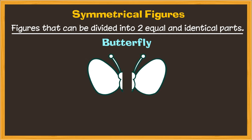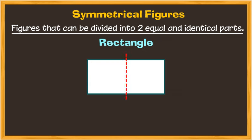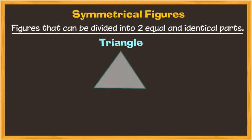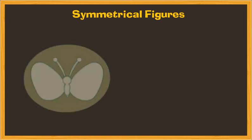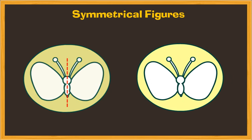But did you notice that symmetrical figures always have a line along which they are symmetrical? For example, the butterfly can be divided equally along this line, but not along this one.